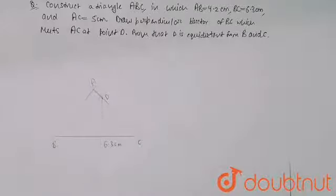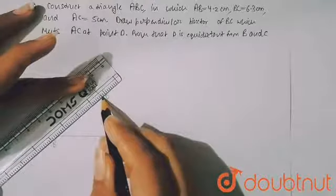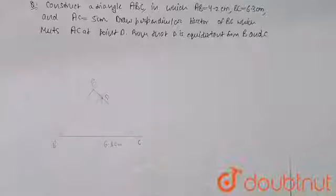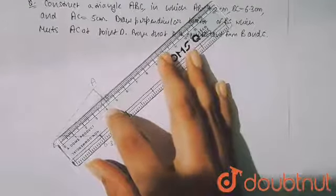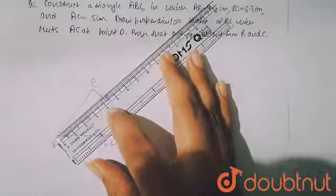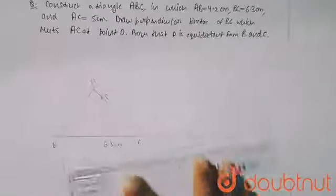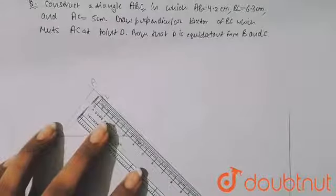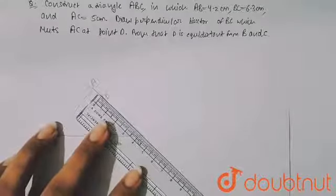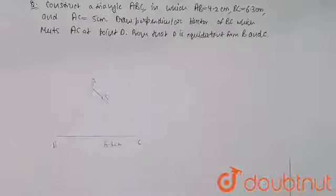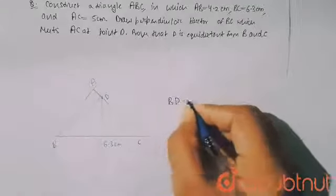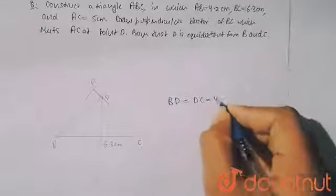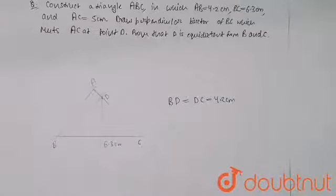To prove that D is equidistant from B and C, join BD. Measure BD — it is 4.2 centimeters. Similarly, measure CD — it is also 4.2 centimeters. So with the help of a scale you can verify that BD equals CD equals 4.2 centimeters.